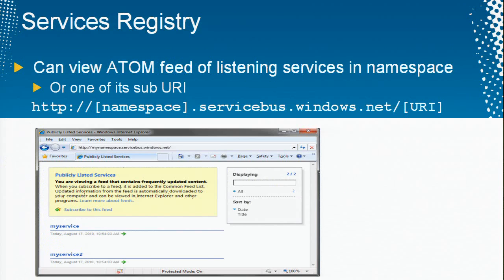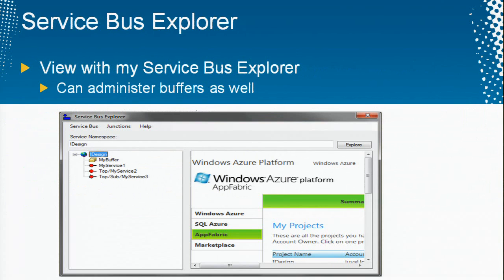Viewing something like this for an Atom feed through a browser is a bit clumsy, so I wrote a tool called the Service Bus Explorer. It lets you log in against your service bus, parses the Atom feed, and presents a logical tree view of your assets on the service bus. As it stands, it only does services and buffers. It used to do other things like routers and queues, but those were taken out before the product was released — they intend to put them back.